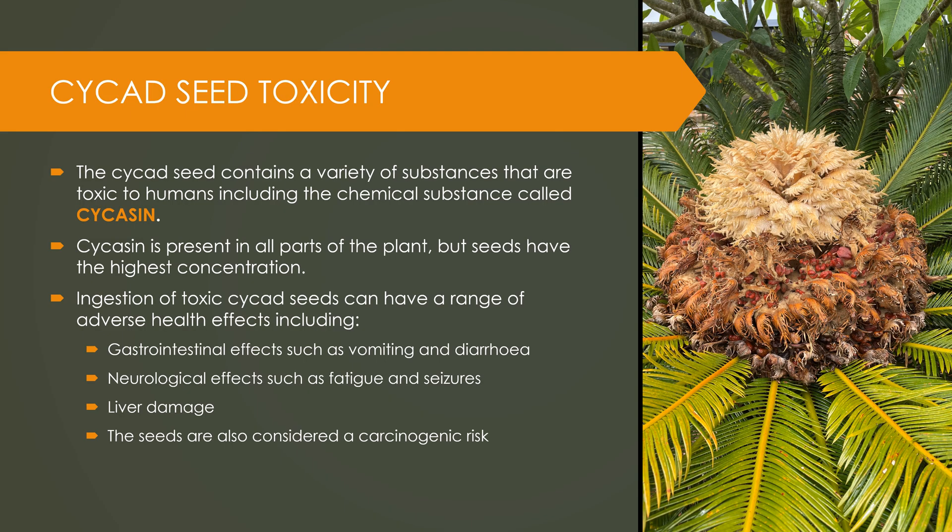The cycad seed contains a variety of toxic substances, but the one of most interest is the substance called cycasin. It is present in the highest concentration in the seeds, but can be found throughout the entire plant. The Aboriginal people want to harvest the seeds as a food, so it's unfortunate that the seeds have such a high level of those toxins. If the toxin was ingested, you would expect a range of adverse health effects impacting your stomach, such as vomiting and diarrhoea. The nervous system can be impacted with fatigue and seizures. The liver can suffer damage, and on top of all of that, the seeds could be a carcinogenic or cancer-causing risk.